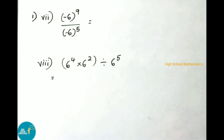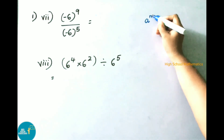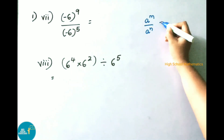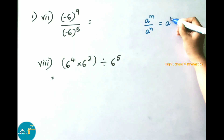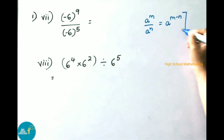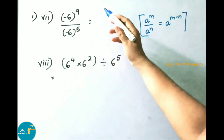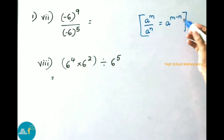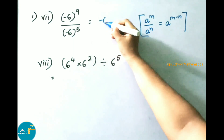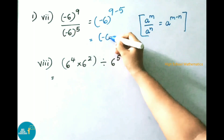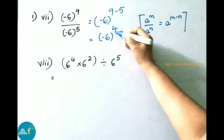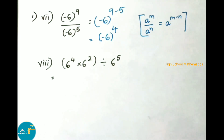Seventh sum: minus 6 power 9 by minus 6 power 5. It is looking like the formula a power m by a power n, where m value is 9 which is greater than n value 5, so the formula is a power m minus n. So minus 6 power 9 by minus 6 power 5 equals minus 6 power 9 minus 5, which is minus 6 power 4.